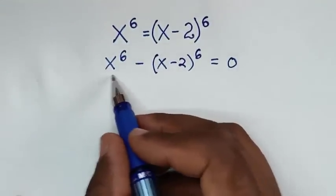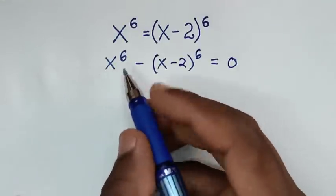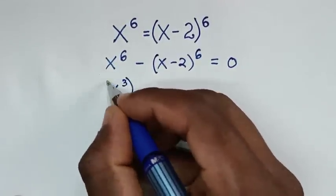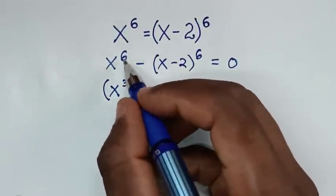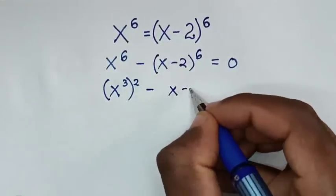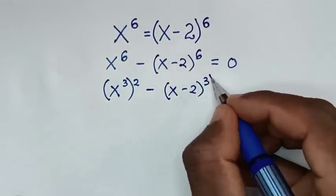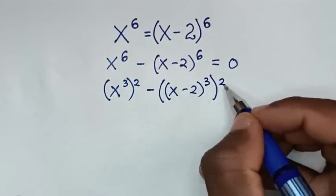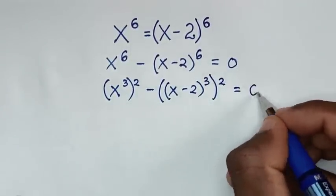From here on the left side we'll write it in the form of a perfect square. From x to the power of 6 it will be x to the power of 3, bracket squared, because power of 3 times 2 is power of 6. Then minus x minus 2 bracket to the power of 3, bracket squared, since power of 3 times 2 is power of 6, equal to 0.